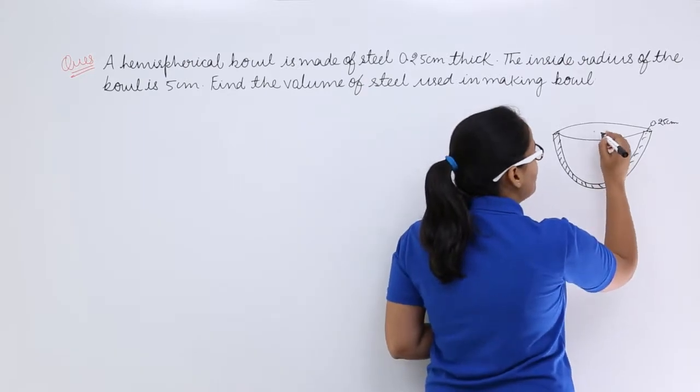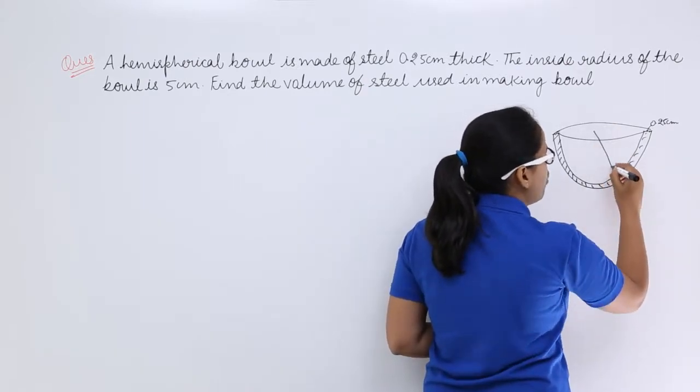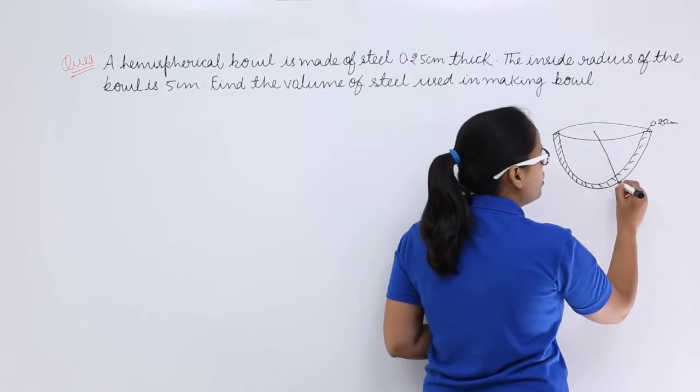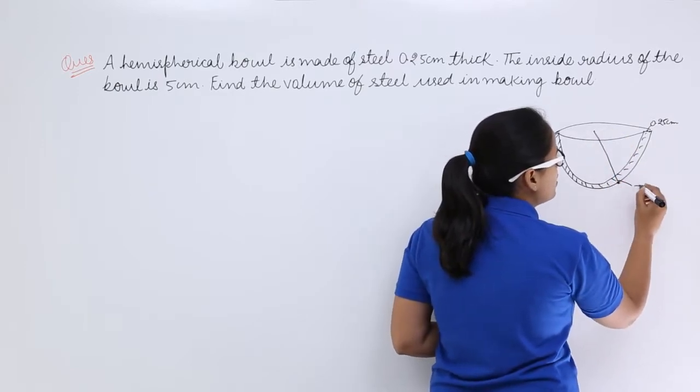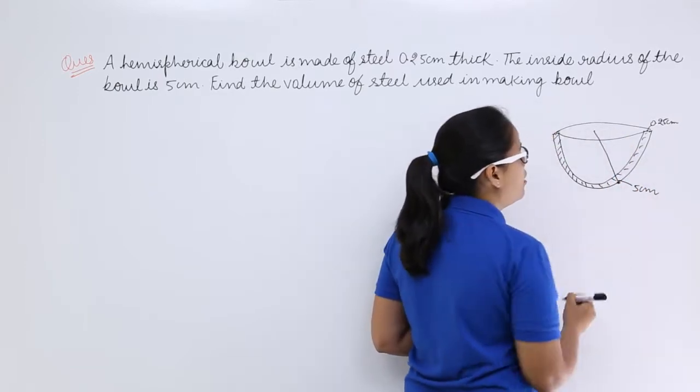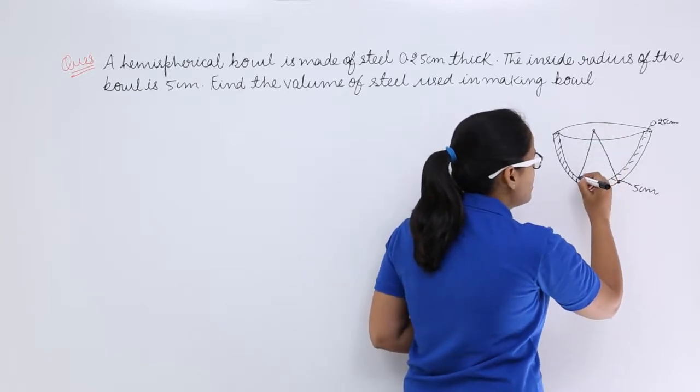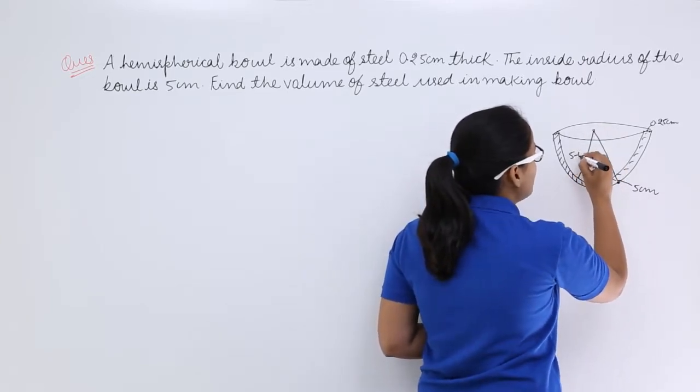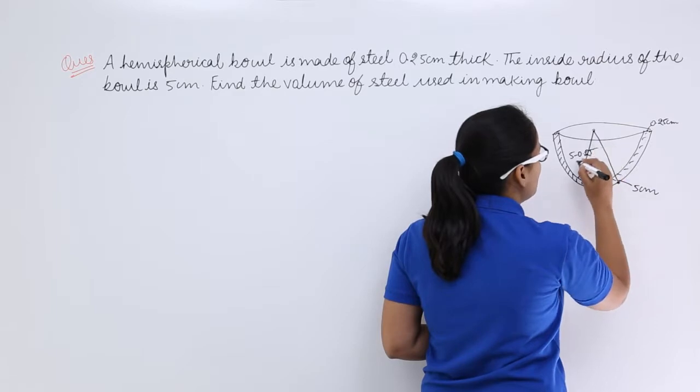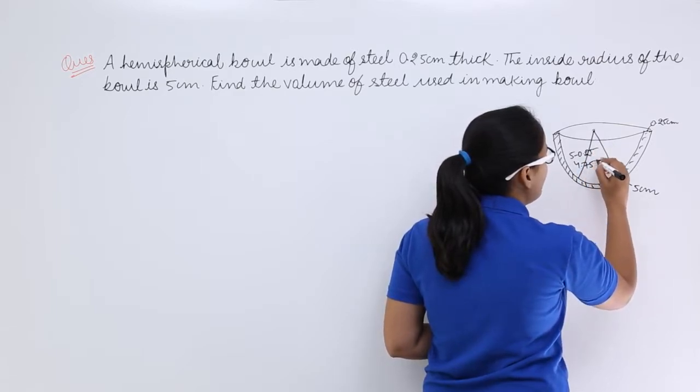The inside radius means we are talking about this radius from this end to this end. This radius is given as 5 cm, and this radius is 5 minus 0.25, which will be 4.75 cm.